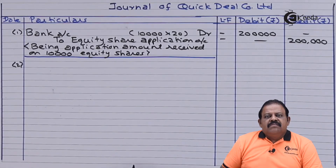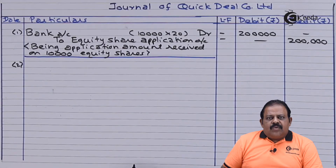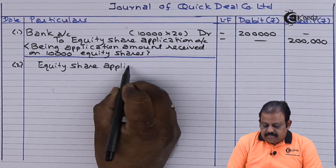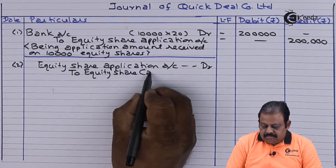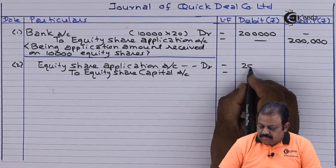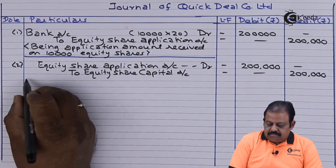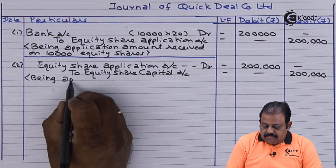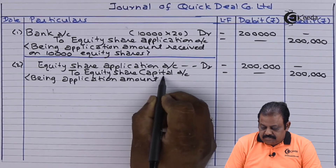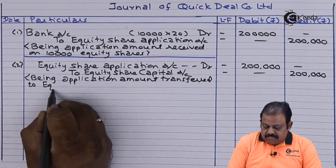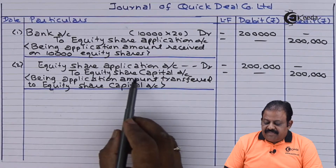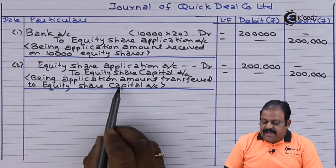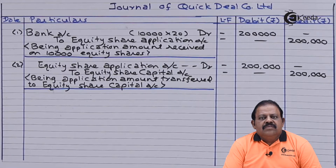The second entry is for transferring this application amount to share capital account. Equity share application account debit rupees 2 lakhs, to equity share capital account rupees 2 lakhs. This is for transferring application amount to equity share capital account. With this we have completed the first stage, that is the application stage.